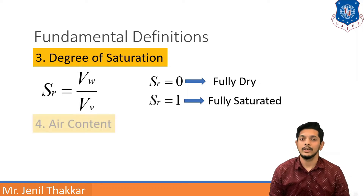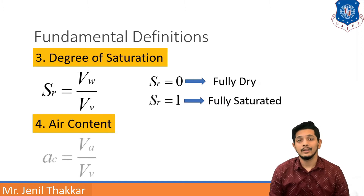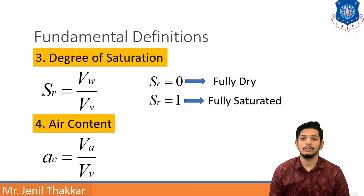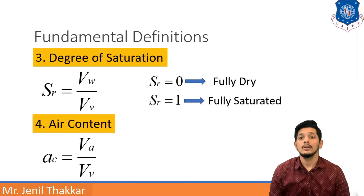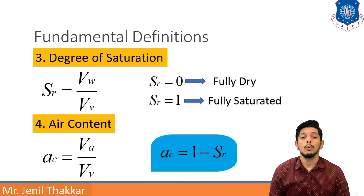The fourth definition is Air Content, also expressed as a percentage. Air Content is denoted by small a with suffix C, written as AC. AC is equal to VA upon VV — Volume of Air upon Volume of Voids. Since Degree of Saturation and Air Content share the same denominator VV, they are complementary to each other, and we can write AC equals 1 minus SR.